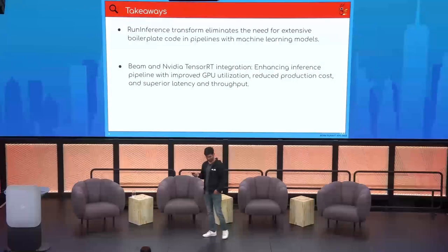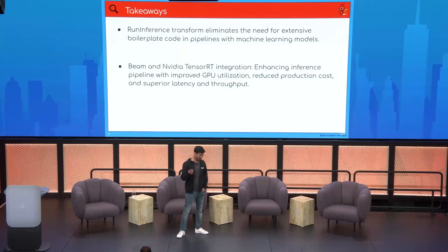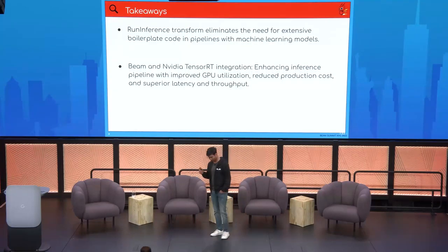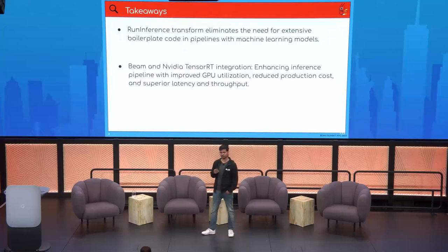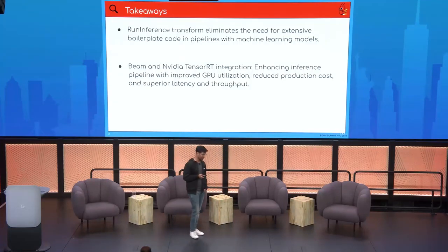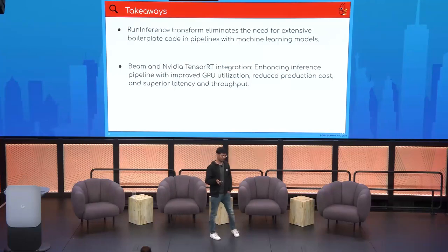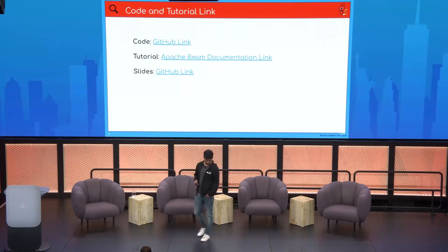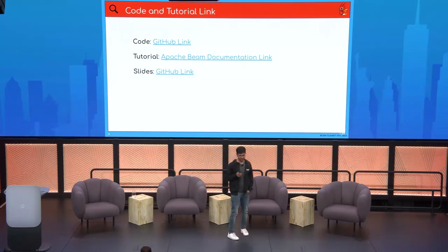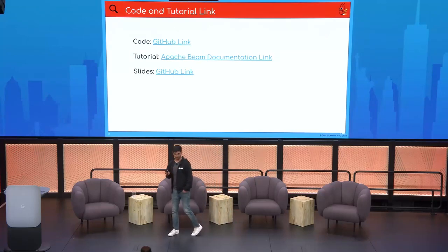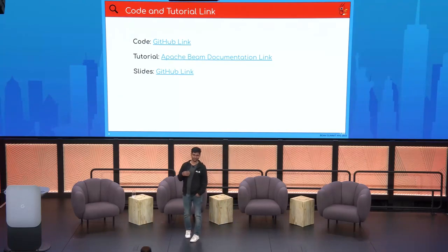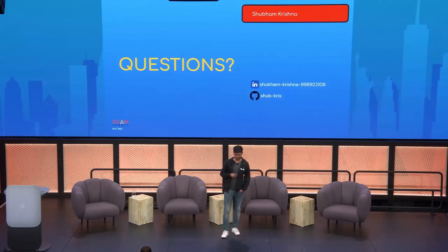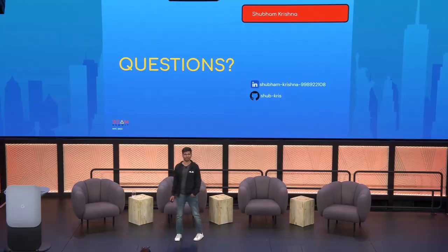The main takeaways: Run Inference is easy to use, the developer experience is great, and it works with all famous ML frameworks. If you use it together with TensorRT, it makes your pipeline much faster — your inference time decreases and the model size also shrinks, saving on GPU costs. The code is available on GitHub and everything I talked about is also on the official Apache Beam Run Inference documentation, step by step. That's all for today — feel free to ask any questions.